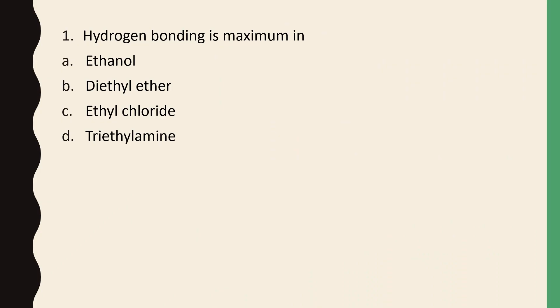Hydrogen bonding is maximum in ethanol, diethyl ether, ethyl chloride, or triethyl amine. The correct answer is option A. Ethanol has the highest hydrogen bonding.